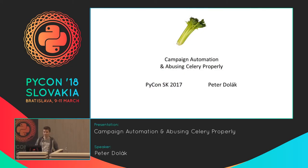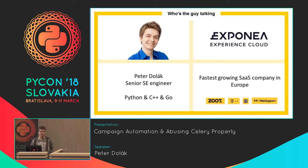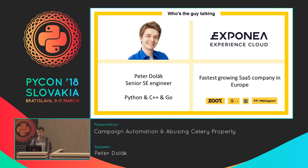Hey guys. My name is Peter Dolek. Since you've already heard about me, let me tell you a bit more about what Exponia is. It's the company where I worked for three years. It's a relatively young Slovak company which has quickly become a global player in analytics and marketing automation. You can find out more about us at the website, of course.